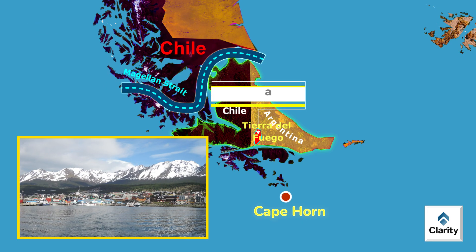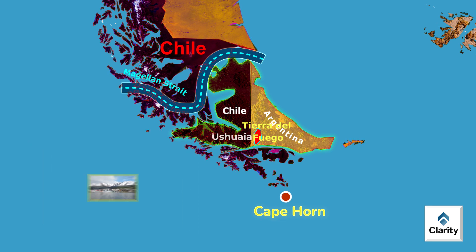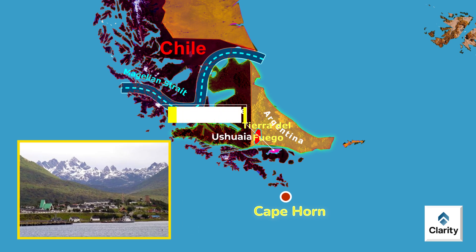Ushuaia is located here — it is the world's southernmost city and is in Argentina. On the Chilean side is Puerto Williams, which claims to be the world's southernmost town. The difference is that one is a city and one is a town, with a city being bigger than a town.